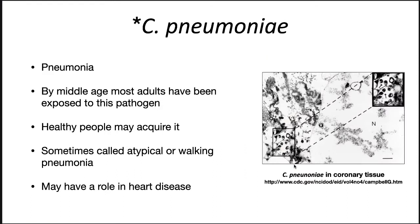Another important chlamydia pathogen is C. pneumoniae, which obviously causes pneumonia. By middle age, most adults have been exposed to this pathogen in some way. Healthy people may acquire it without showing any pathology. In some cases it causes a mild disease called atypical or walking pneumonia. There is some evidence that this pathogen may have a role in heart disease, but the link so far is correlational and no mechanism has been proposed linking C. pneumoniae infection with cardiovascular disease.